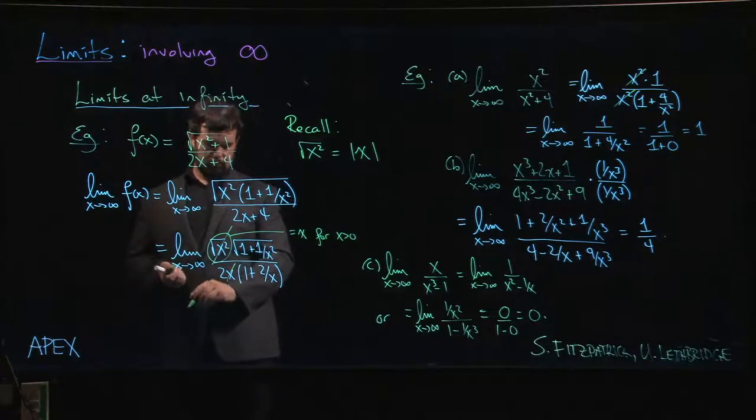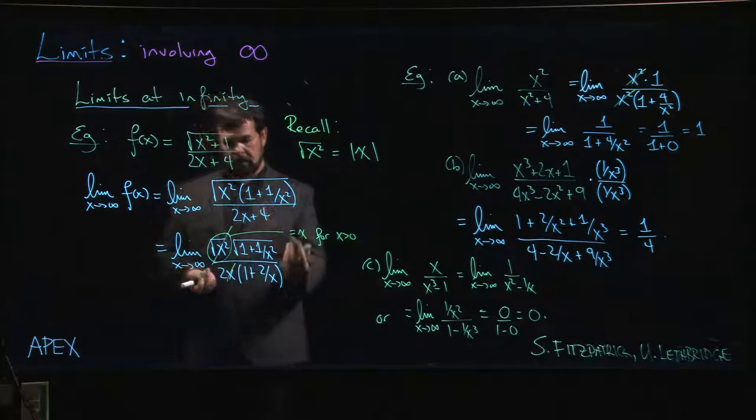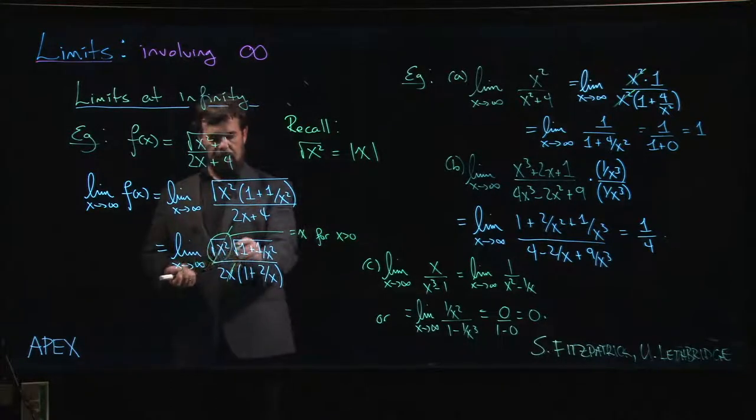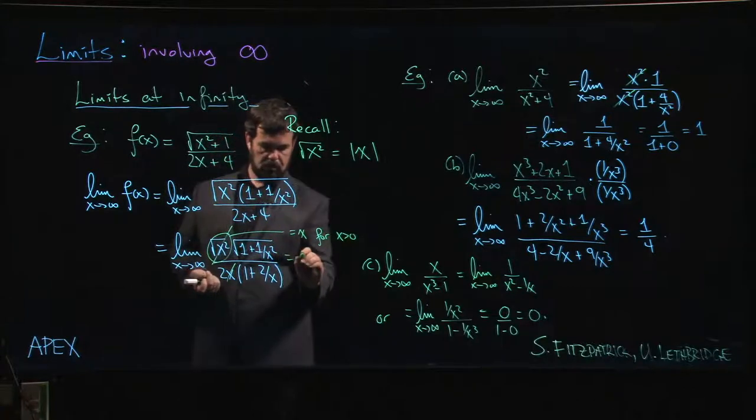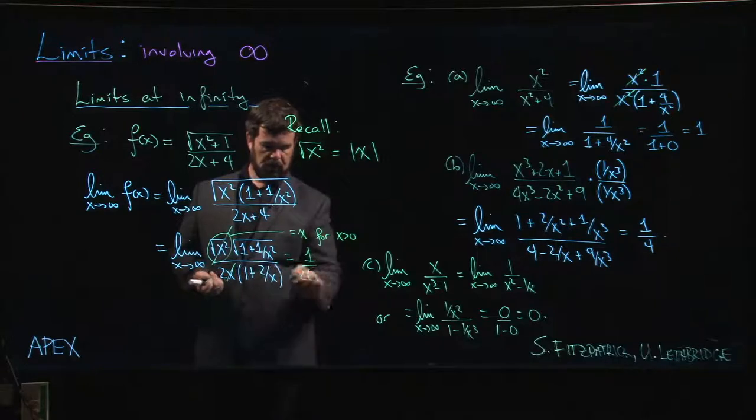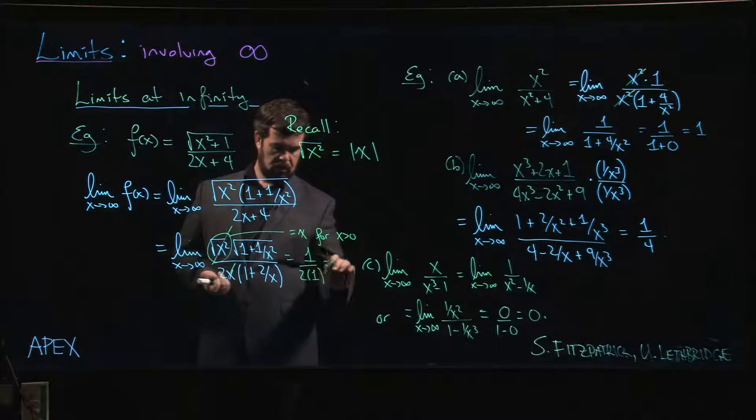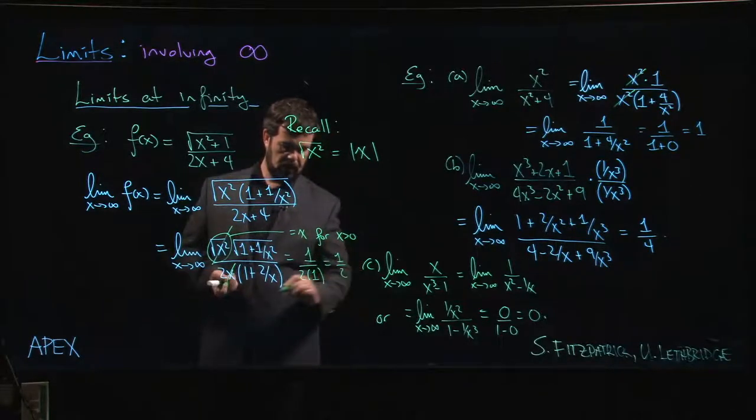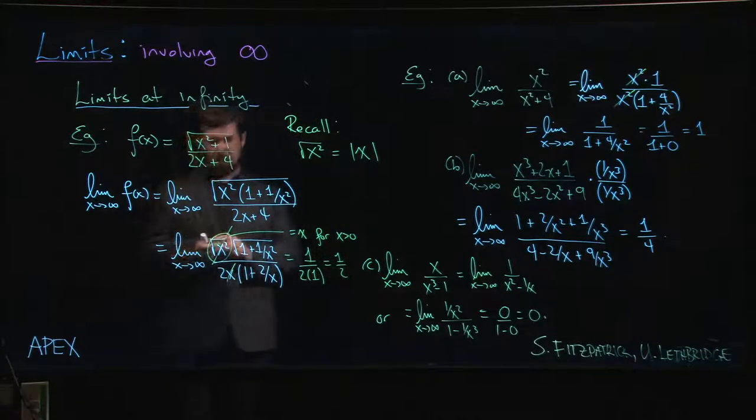All right, then I can apply limit laws. I know that I can bring the limit inside the square root, so this is just going to be one plus zero under the square root, so I just get one over two - well, two times one - so I get a half.